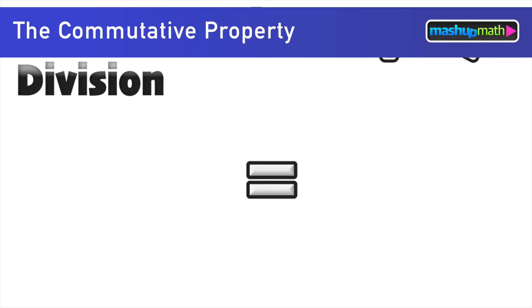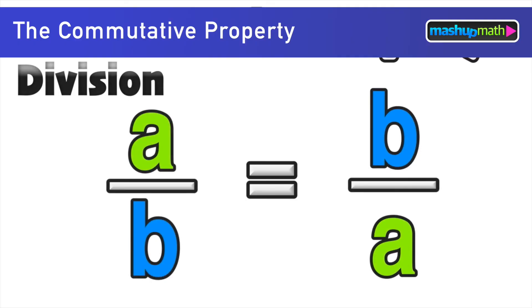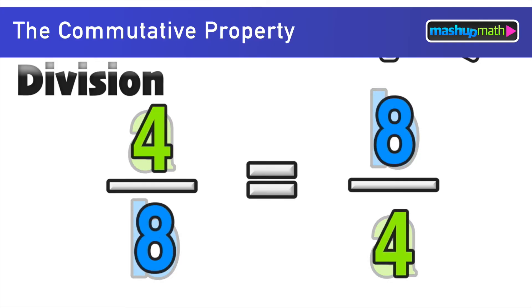So now we can check out division. If division is commutative then a over b would have to be equal to b over a. So let's go ahead and replace the a and b terms with the same numbers as before, four and eight.